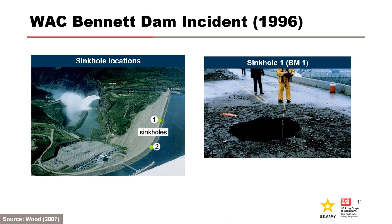BC Hydro's WAC Bennett Dam is a 182-meter-high, 2-kilometer-long, zoned earth-fill embankment dam located on the Peace River in northeastern British Columbia that retains the 70-billion-cubic-meter Williston Reservoir. The dam was constructed almost entirely of well-compacted glacial moraines, which were sorted and blended to form core, transition, filter, and shell zones. In 1996, after 28 years of reliable operation, two sinkholes emerged on and upstream of the dam crest. Investigations revealed that the core materials beneath the sinkholes were heavily disturbed down to bedrock, indicating that silty and widely graded soils may be susceptible to internal erosion.